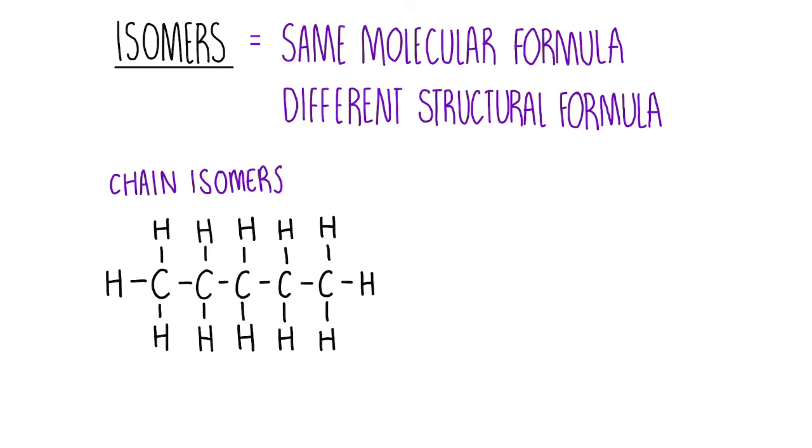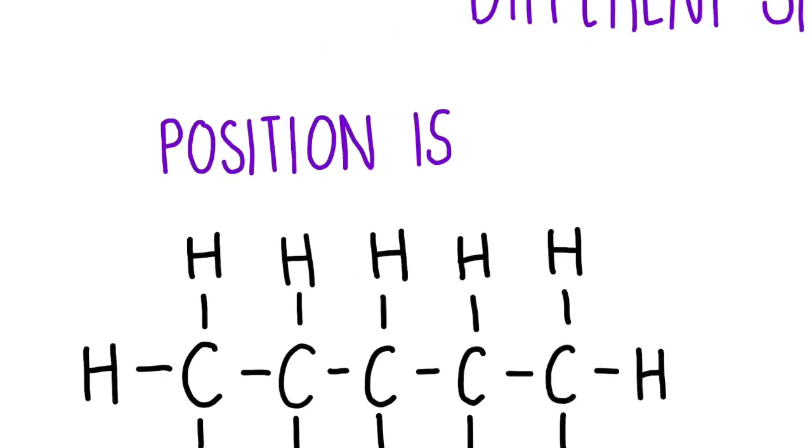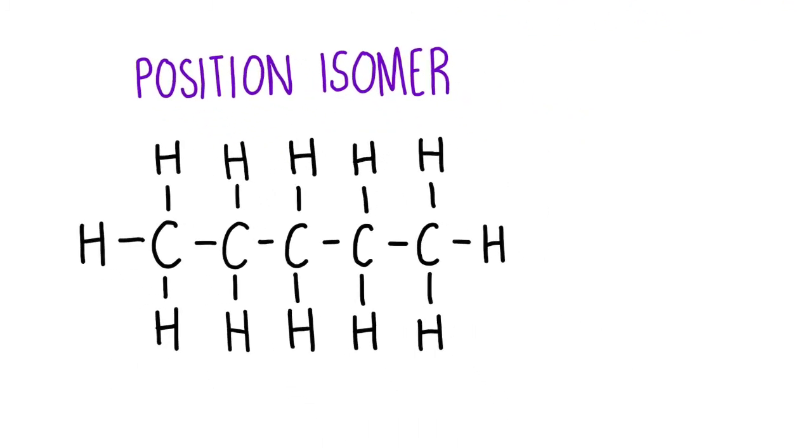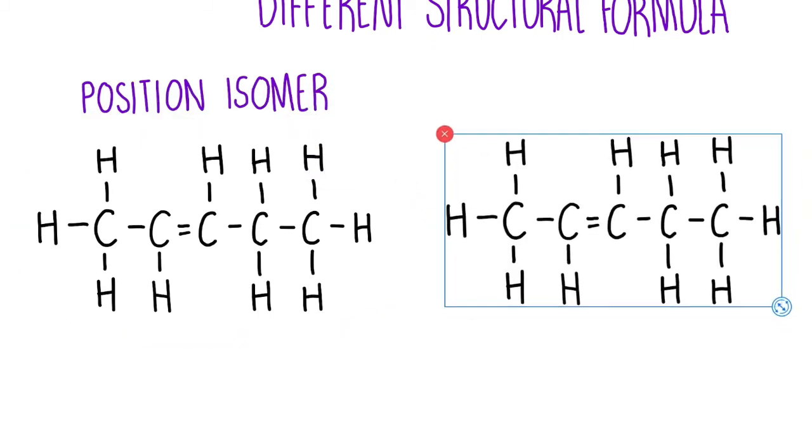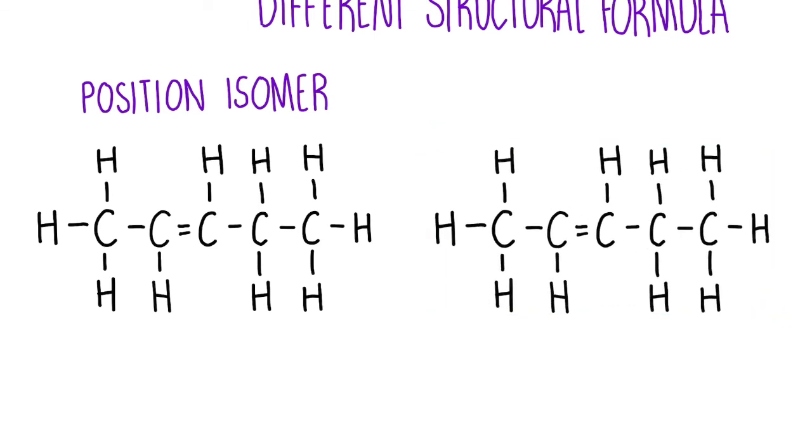Another type of isomer are called the position isomers. This is when you've got a functional group that's in a different position. Let's introduce a functional group by adding a double carbon bond and making this into pentene instead. With a position isomer, all we need to do is pop that functional group in a different position. Instead of having that alkene functional group after the second carbon, maybe I can move it right into the middle here and have it on the third carbon instead. Just make sure that every carbon is using only four bonds. We would call this pent-2-ene and pent-3-ene and they would be position isomers.